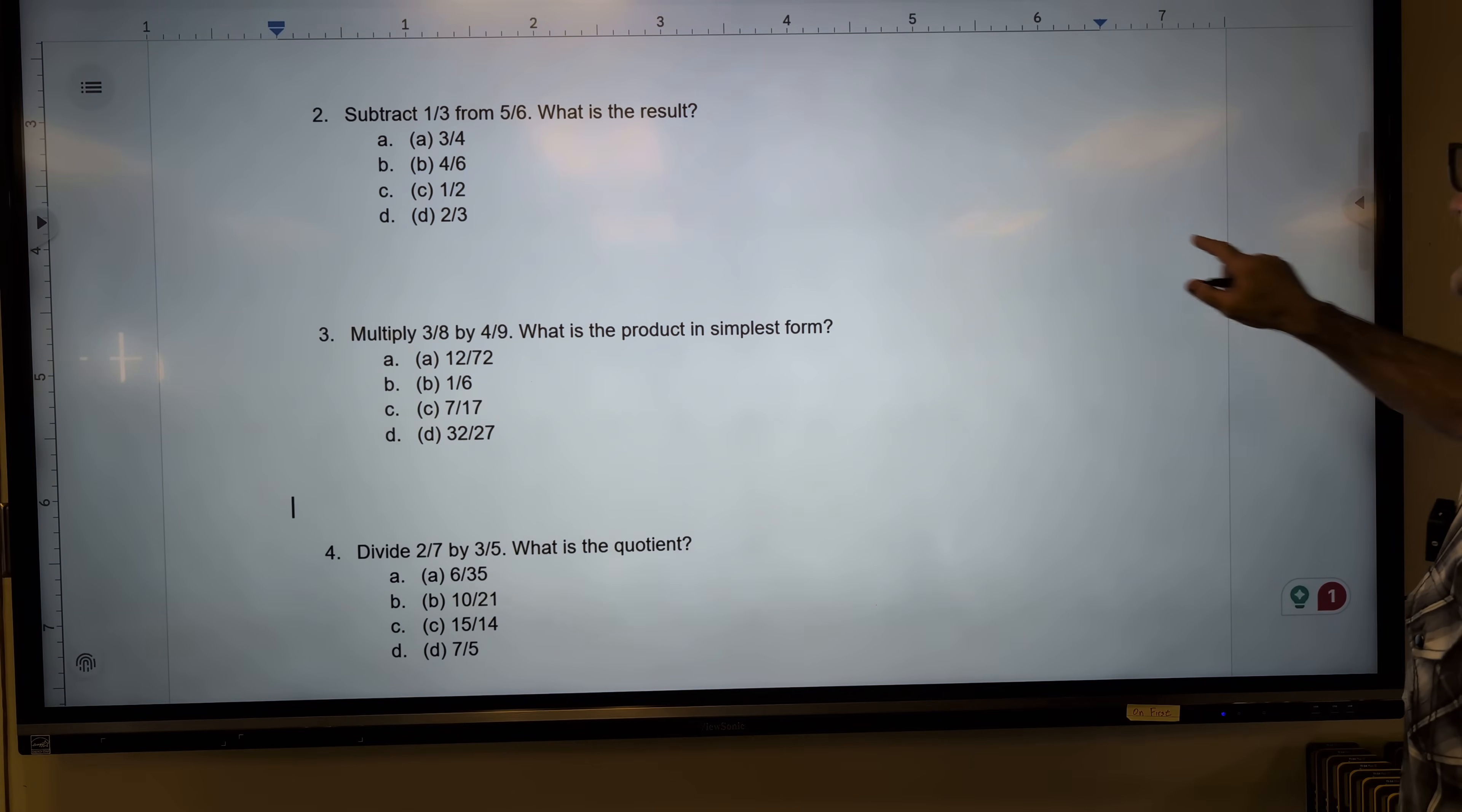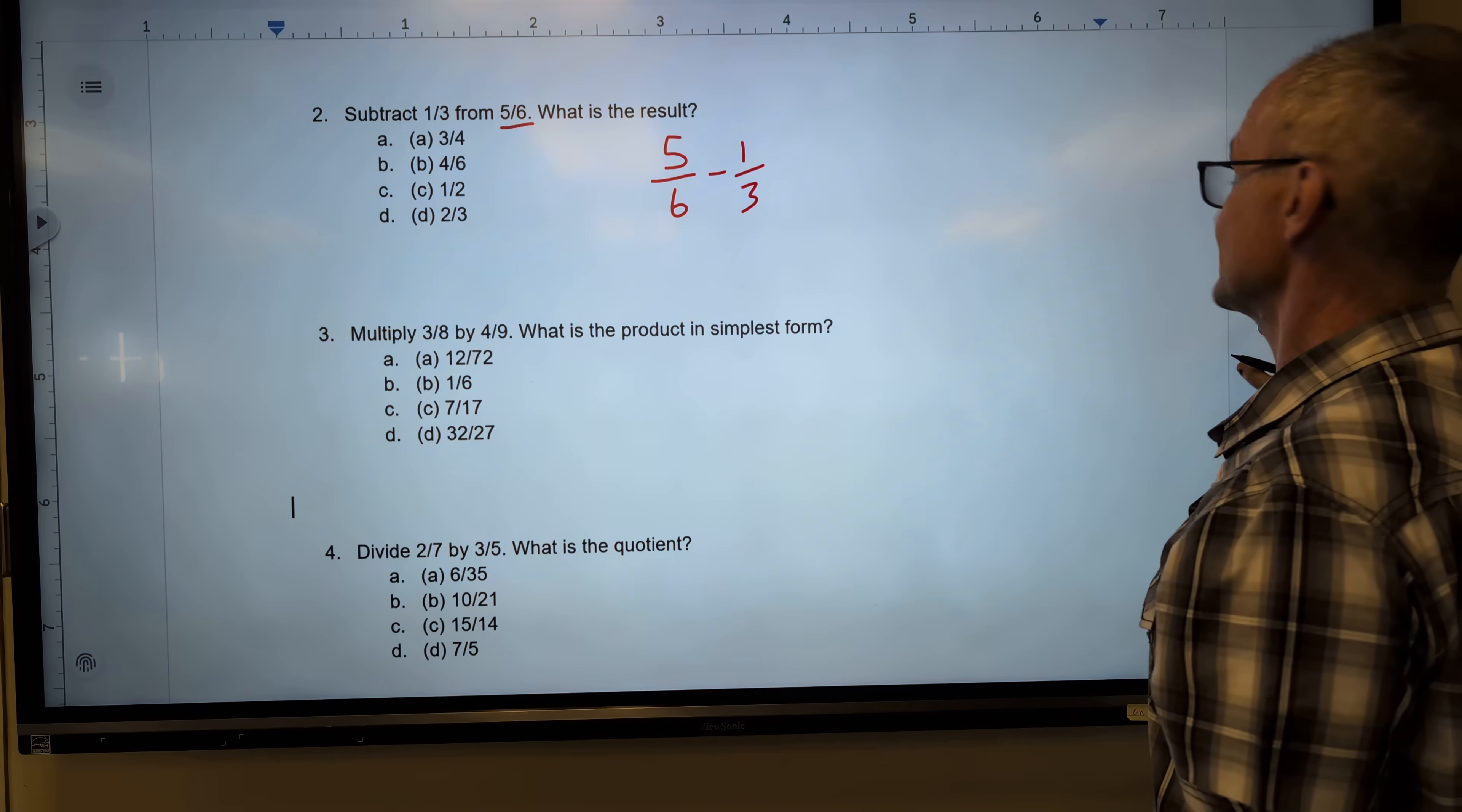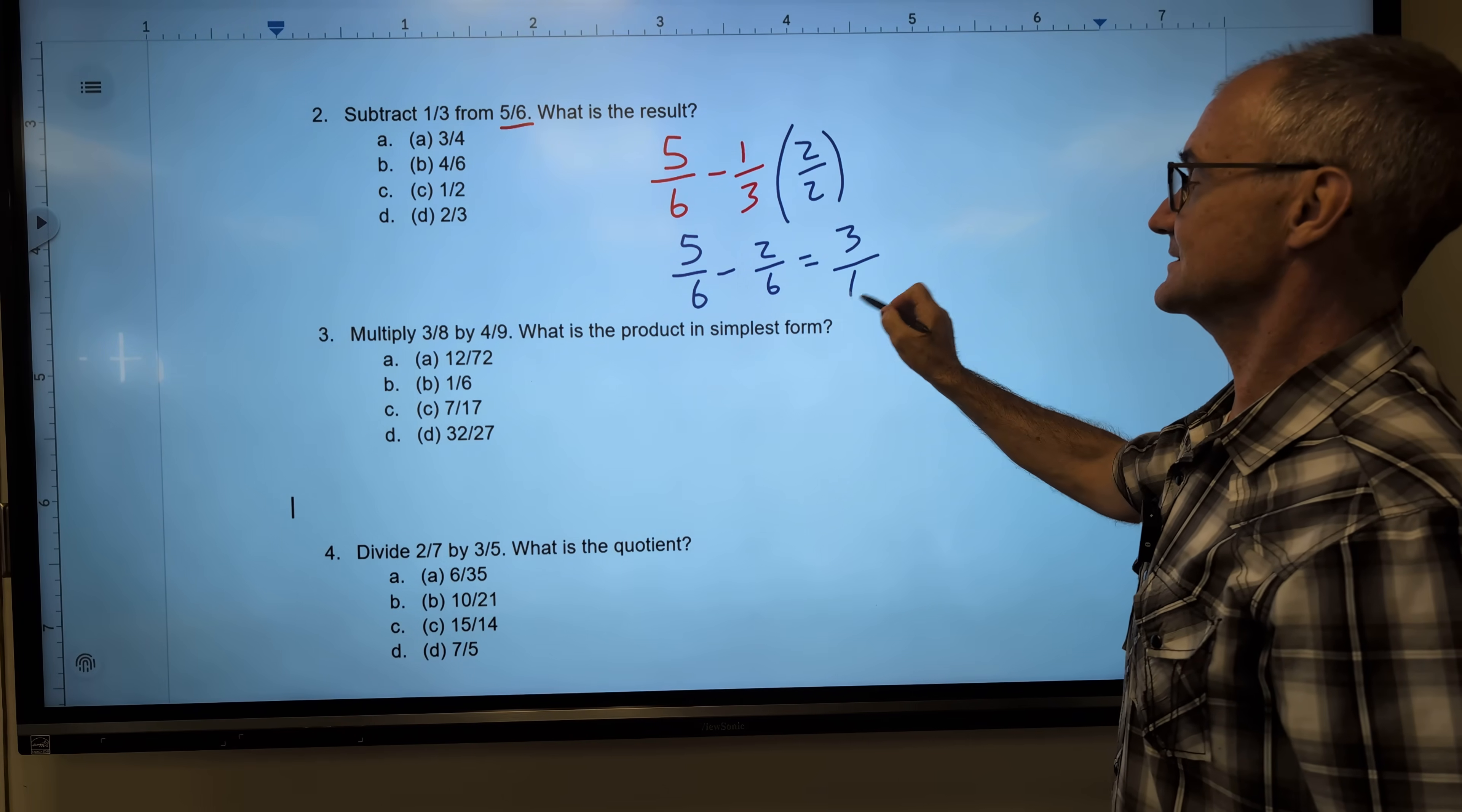Okay, moving on to number two right here. This one's a subtraction as well, a little bit of decoding of the words. Subtract one-third from five-sixths. So I am starting at five-sixths, then I subtract one-third from that. Adding and subtracting, I need a common denominator again. That common denominator is going to be a six. I multiply this by a factor of one, doesn't change the value of my term, but it gives me a six in the denominator. Now I have five-sixths minus two-sixths. I have that common denominator. I subtract across the top. Five minus two is three. Keep the common denominator as six.